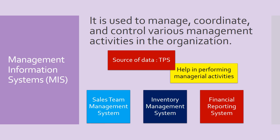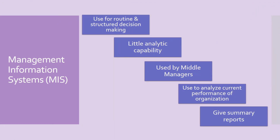Management Information Systems (MIS) are used to manage and control various managerial activities in the organization, helpful for managers in performing and coordinating their activities. Examples include sales team management system, inventory control system, and financial reporting system. The main source of its data is TPS. MIS is used for routine and structured decision-making by middle managers, has little analytical capability to summarize data and create summary reports, and is most importantly used to analyze current organizational performance.